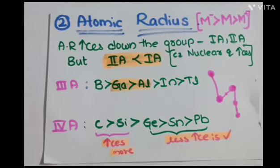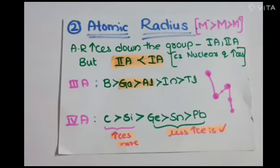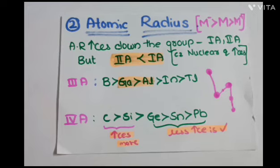For IIIA group, there is only a slight difference between gallium and aluminum, and for IVA group there is no difference in the expected trend.